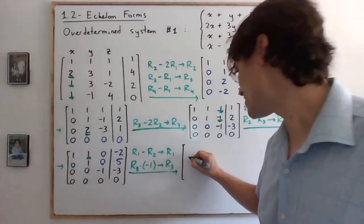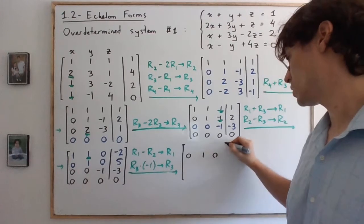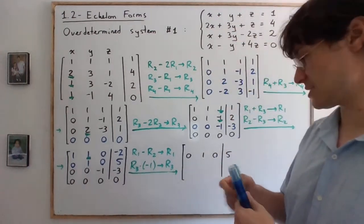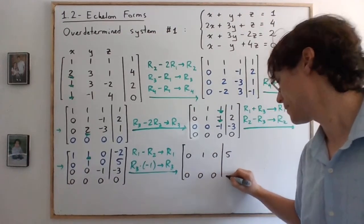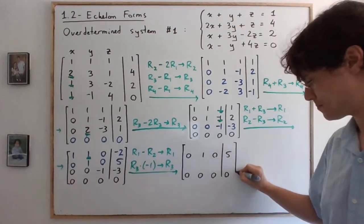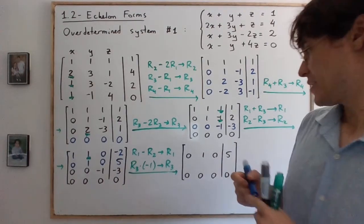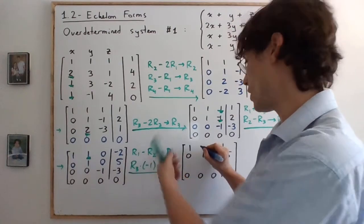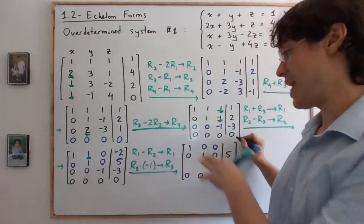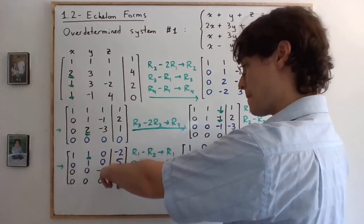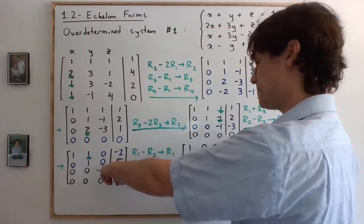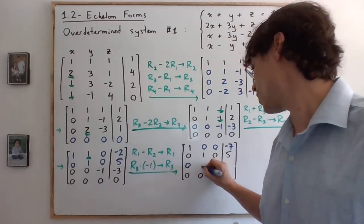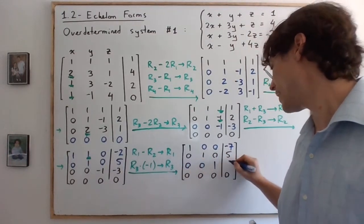Actually, row two is not changing. Row four is not changing as well. And then row one: let's perform this. This is obviously one. One minus one is zero. Zero minus zero is zero. And negative two minus five, so that's going to be negative seven. And then the third row is scaled by negative one. So we have zero, zero, one, three.